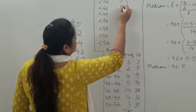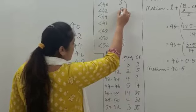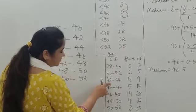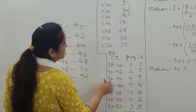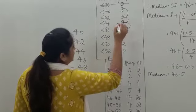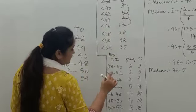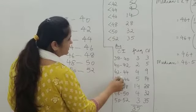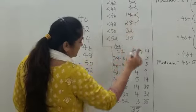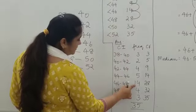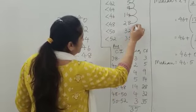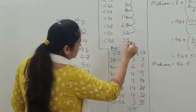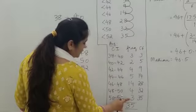Continuing: 9 minus 5 equals 4, which is the frequency of the class interval 42 to 44. Next, 14 minus 9 equals 5, which is the frequency of the following class interval. Then 28 minus 14 equals 14. Next, 32 minus 28 equals 4. Finally, 35 minus 32 equals 3.